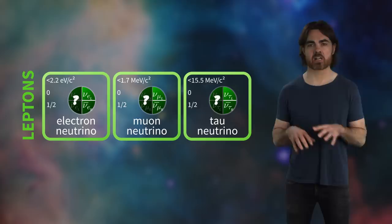If neutrinos gain their mass by the same mechanism as quarks and electrons, that means their chirality oscillates. That would require regular left-handed neutrinos to spend at least a bit of their time as sterile right-handed neutrinos.